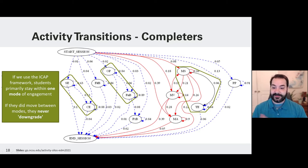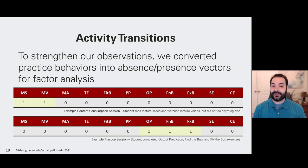For example, a self-explanation exercise here with SE, we see that there is a high probability that they would move to a coding exercise. And in this case, SE is a constructive activity. Coding exercises are an interactive activity. We can see that on two other locations. With this in mind, we wanted to strengthen our observation that students were staying within our platforms and there were particular types of practice sessions. And to do that, we used a factor analysis.